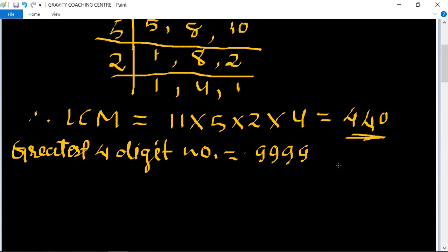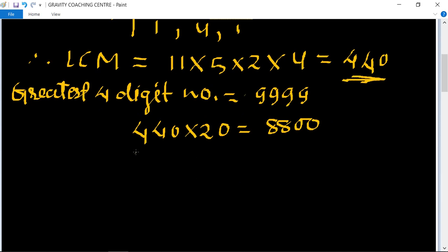So first we multiply 440 into 20 and their product equals 8800. And again multiply by 22, so its product equals 9680.